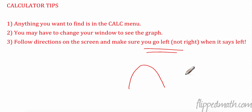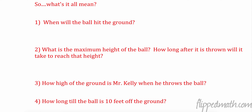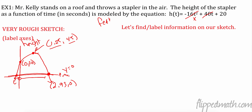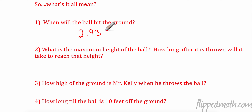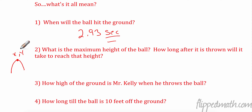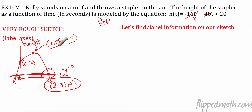Remember: quadratic graphs move in two directions at once. The cursor only moves left or right; the calculator handles the rest. Now answering questions — when will the ball hit the ground? The ground is height zero, so the answer is 2.93 seconds. What is the maximum height? That's the y-value at the vertex: 45 feet at 1.25 seconds.